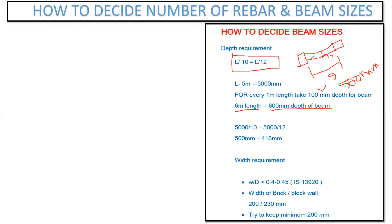Let us consider the length column to column is five meters. So L by 10: put it in mm, it comes out to be 5000 divided by 10. That is the formula, and also 5000 divided by 12. So you are getting 500 mm and 416 mm. The depth of my beam should lie in between this — that is 416 to 500 mm. You can go with 450 mm as a depth of your beam.